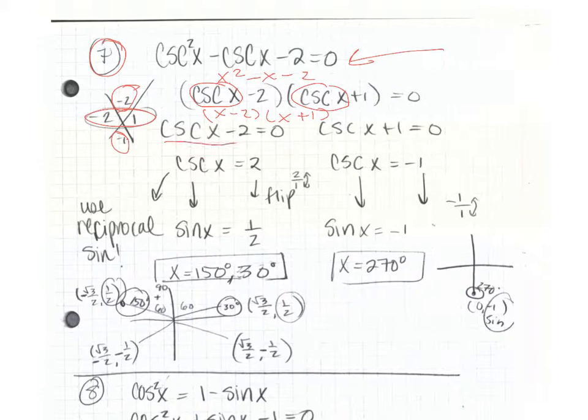Then we set each of these factors, cosecant x minus 2 equal to 0, and cosecant x plus 1 equal to 0. When we solve, we get cosecant x equals 2, cosecant x equals negative 1.